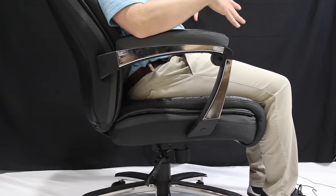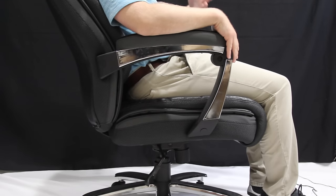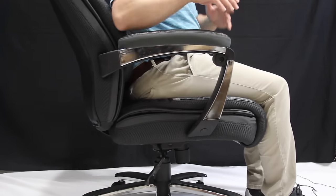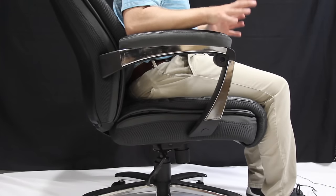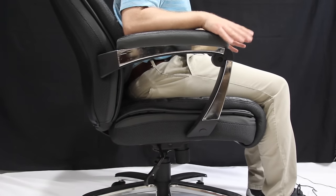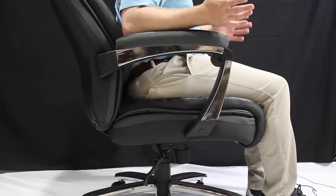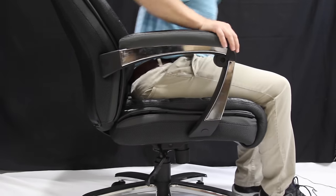And that's because the tilt tension adjustment is as tight as it will go. Typically, our chairs will ship with the tilt tension at its maximum setting so that when someone who is unsuspecting sits in the chair, they don't go flying backwards.